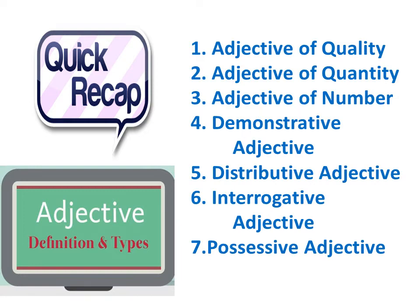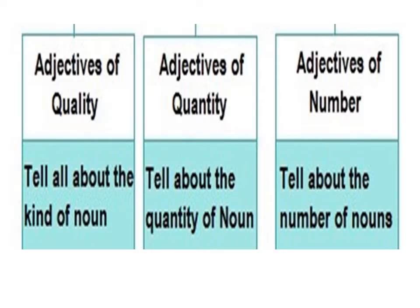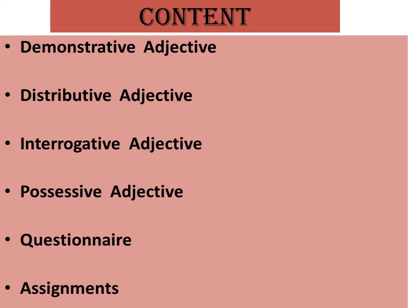Adjective of quality tells all about the kind of noun. Adjective of quantity tells about the quantity of the noun. Adjective of number tells about the number of nouns. So we learnt till here. In today's session we will learn about demonstrative adjective, distributive adjective, interrogative adjective, and possessive adjectives.